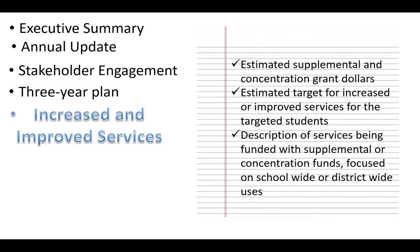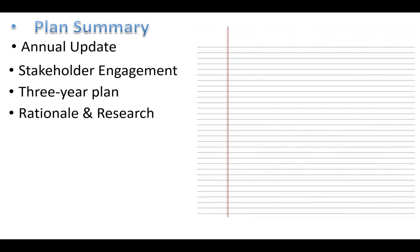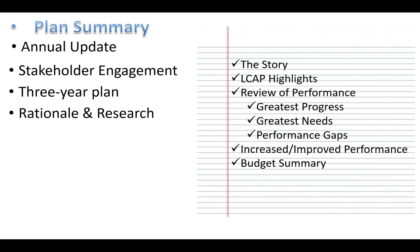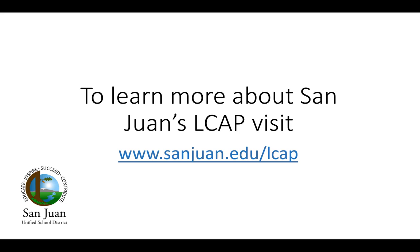The drawback of an LCAP for most school districts is that they're very long. In 2017, California added a plan summary that starts the LCAP. This is where a district can provide highlights of its plan without getting into a lot of detail. For readers who aren't sure where to start, the plan summary is a good choice. It helps the reader understand what kind of progress a district is making. Regardless of the length of the LCAP, readers should be able to get a general idea of how a district is using its resources to support all students, and especially those in the targeted groups, by reading the plan summary. To learn more about San Juan's LCAP, please visit www.sanjuan.edu/lcap.